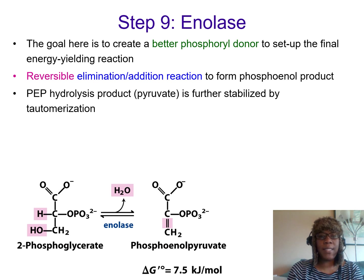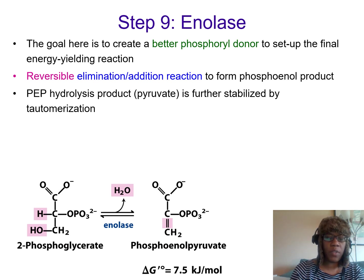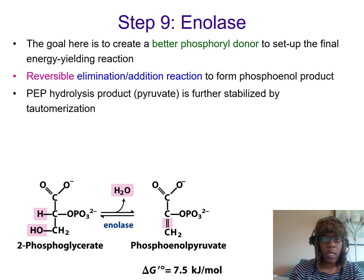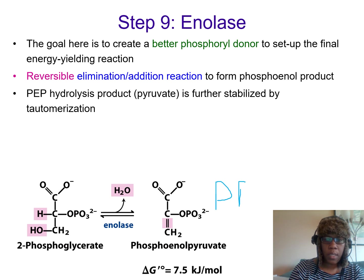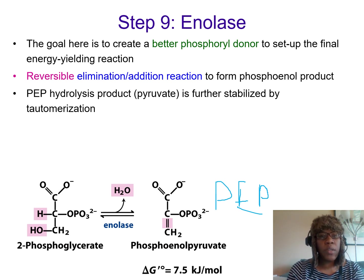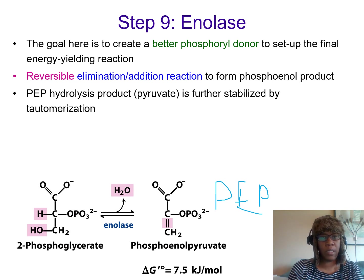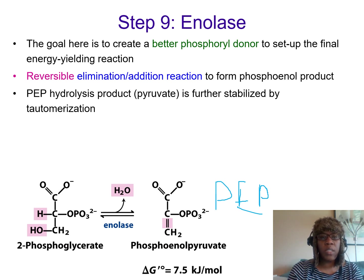The ninth step is catalyzed by the enzyme enolase. From 2-phosphoglycerate, enolase produces phosphoenolpyruvate, sometimes called PEP. PEP is a very energetic molecule. The goal here is to create a better phospho donor to set up the final energy-yielding step. So we've created PEP to set us up to create pyruvate. It's a reversible elimination-addition reaction.